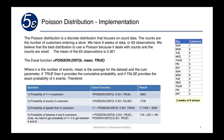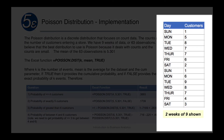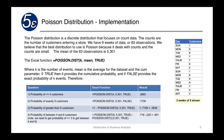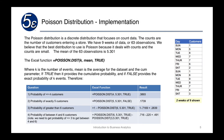The Poisson distribution is a discrete distribution focusing on count data — in this case, the number of customers entering a store, shown on the right. We have nine weeks of data, or 63 observations, with only two weeks shown. We've calculated the mean of the 63 observations as 5.301. Using the Excel function POISSON.DIST with k as the number of events, the mean, and true for cumulative or false for an exact probability of k events, we get the following results.